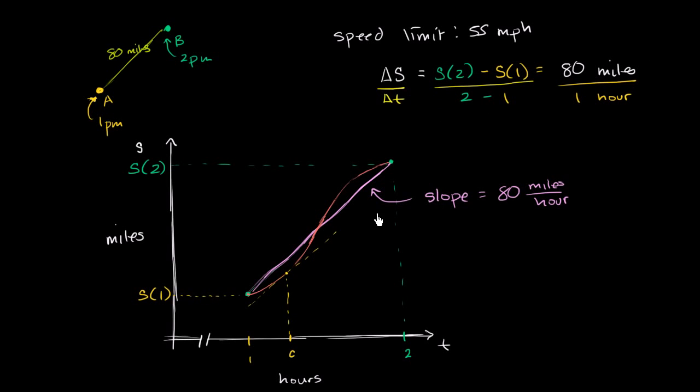the mean value theorem says that at some point, there exists some time where S prime of C is equal to this average velocity, is equal to 80 miles per hour. And it doesn't look like that's the only one. It looks like this one over here could also be a candidate for C.